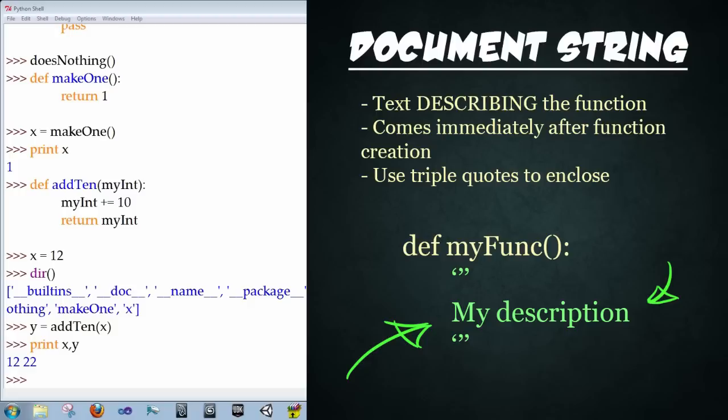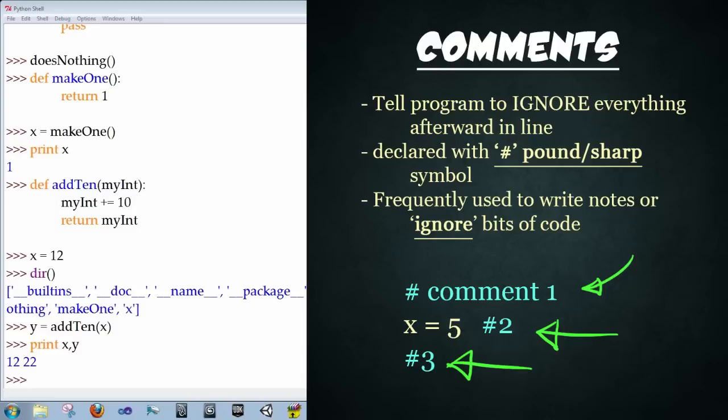Comments on the other hand are notes that are completely ignored by the computer when it's doing its computing. It's a way to leave a message for other programmers or for yourself down the road. It is also a way to comment out broken code, I need to emphasize this. Whenever your code breaks, commenting it out is a great way of debugging. The way of creating a comment is you simply start with a pound sign or a sharp sign at the beginning of the statement, and from then on it's ignored. So you can attach this at the end of a line, right before a line or after a line, whatever you choose.